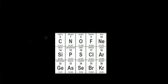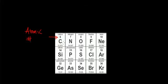Before we begin, let's re-familiarize ourselves with what the periodic table tells us. This first number is the atomic number, and what the atomic number tells us is the number of protons within the nucleus of the atom. For example, carbon has six protons in its nucleus, nitrogen has seven protons, and oxygen has eight protons in its nucleus. The difference between any two atoms on the periodic table is the number of protons within the nucleus of that atom.